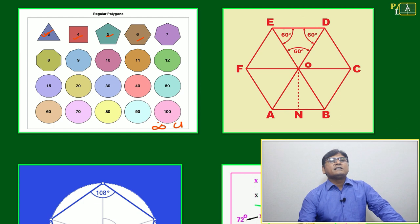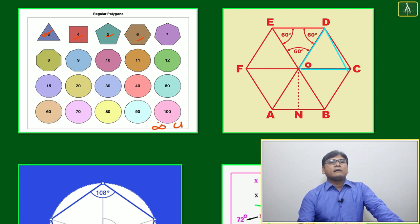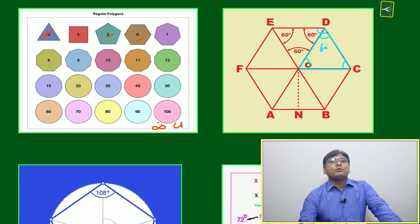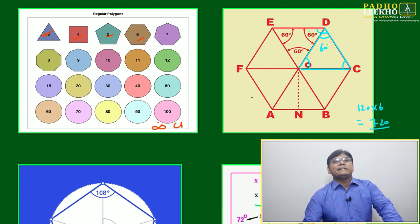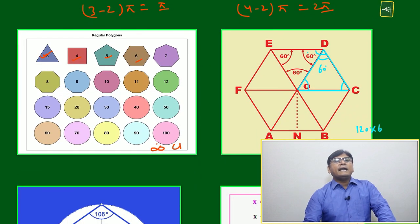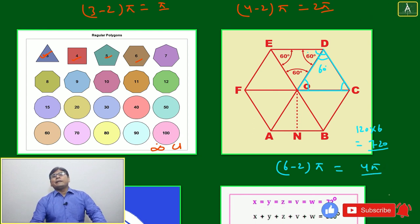For a regular hexagon, each of the six triangles formed from the center is equilateral, so each angle at the vertex is 60° + 60° = 120°. The total interior angle sum is 120° × 6 = 720°. Using the formula: (6 − 2)π = 4π = 4 × 180° = 720°. This confirms the formula.